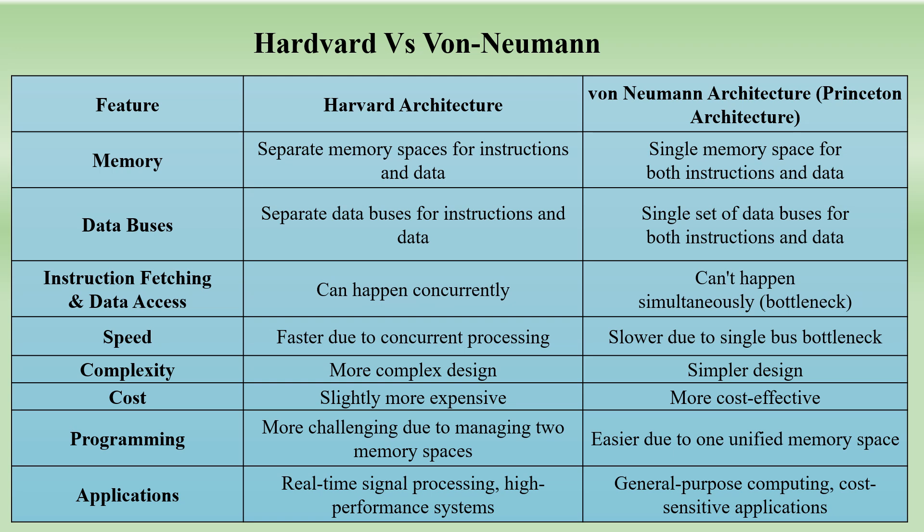Von Neumann programming is easier because it has a single memory space. Application: Harvard is used for real-time performance systems or real-time signal processing systems. Von Neumann is used for general computers and personal computers.